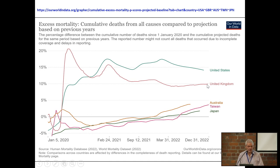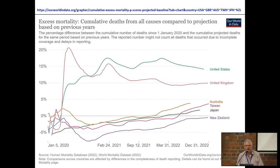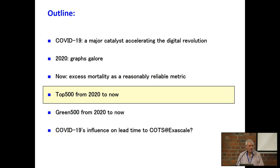Australia is climbing up towards 5%. Taiwan is climbing up towards 5%. Japan too. What is New Zealand? It's negative. We have had fewer deaths since the beginning of COVID than would have been otherwise forecast. That's because we've been taking better care of ourselves — fewer pub fights, less motor car accidents. New Zealand — why is it not on the map?